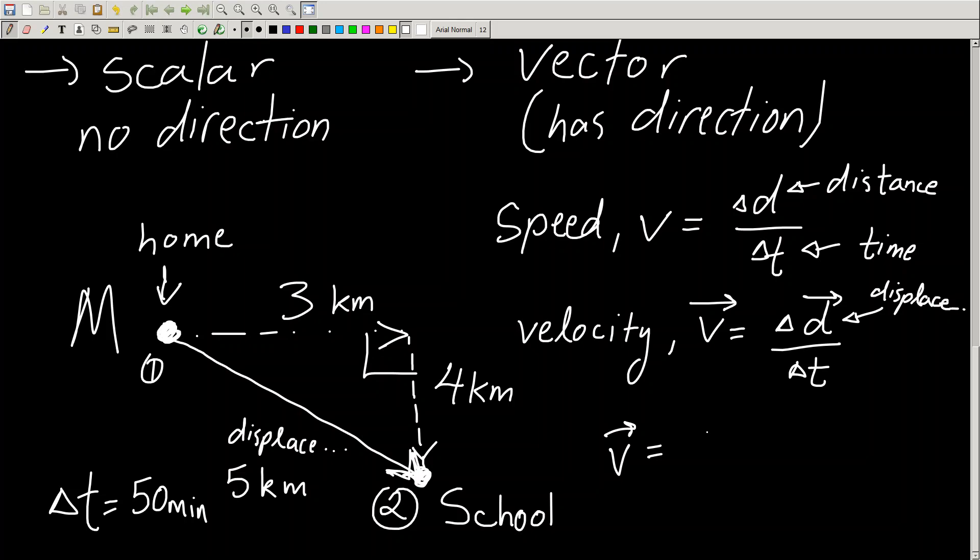Then the displacement vector, which before in the previous video was 5 kilometers east 53 degrees south, will be in the numerator, whereas in the denominator I'll have 50 minutes. All I have to do is divide out 5 and 50, and I get the magnitude of my velocity vector, which is 1 divided by 10, kilometers per minute, and I'd still have the same direction as my displacement. That doesn't change.